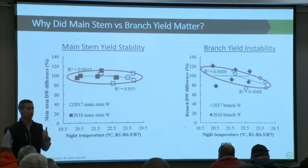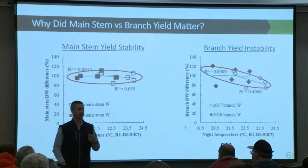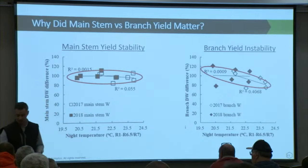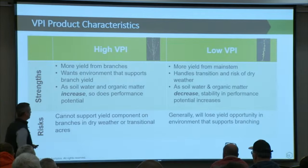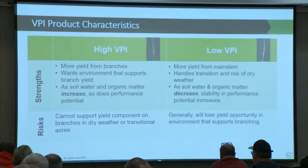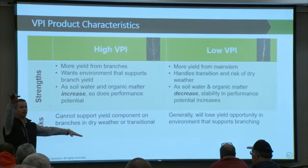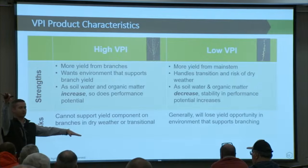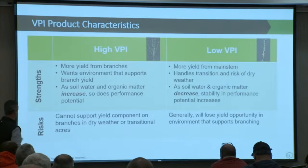We were able to parse out subfield acres and absolutely validate: on stress acres you want to make sure you're more main stem. When you get into environments where you can take advantage of branching, there's an opportunity with a more branching variety. One important clarification: this doesn't define yield potential. You can have high-yielding branching varieties and high-yielding main stem varieties. What it helps guide you on is getting them placed as well as you possibly can to take advantage of their characteristics.